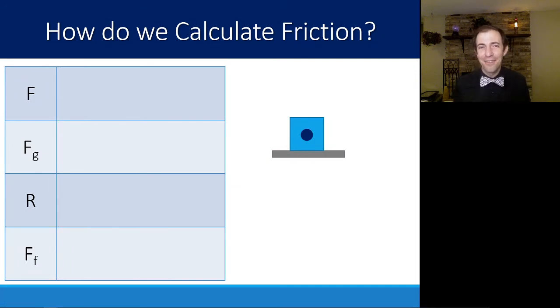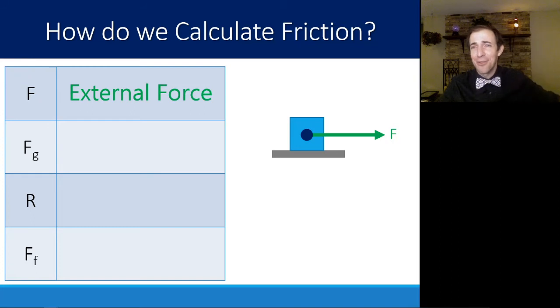How do we calculate friction? Given a scenario, let's imagine that we're pulling a block here. Let's call it force F, that is our external force that would probably be given to you. I pulled with 20 newtons of force, this is a force that I know.